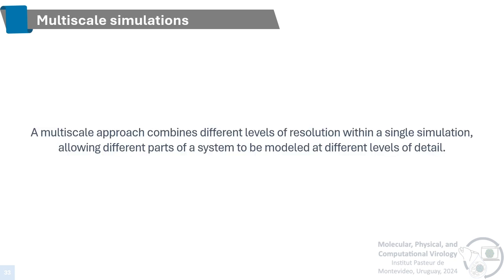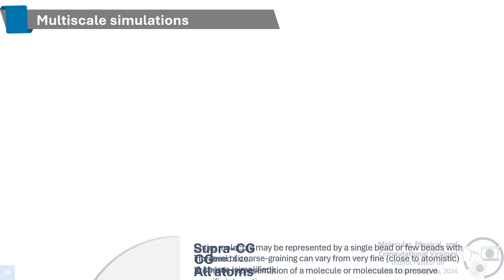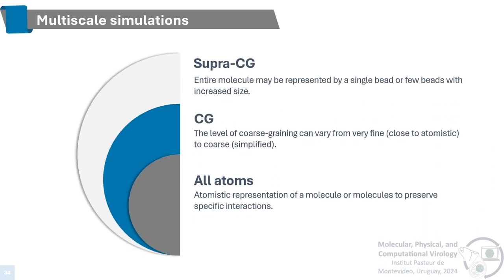The last topic I want to talk about is multiscale approaches, which is very relevant to this workshop. A multiscale approach combines different levels of resolution within a single simulation, allowing different parts of a system to be modeled at different levels of detail. We can have a dual-resolution system combining an all-atom model with a coarse-grained model, or a coarse-grained model with a super coarse-grained model — where an entire molecule can be represented by a single or few beads with increased size — or combine all three models in a triple-resolution system.